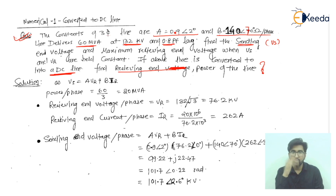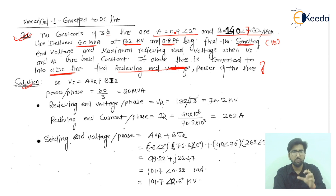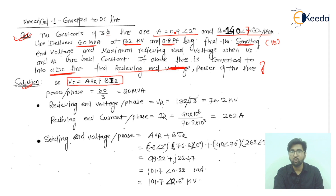Now we start with the solution. We have some given data which we will list and solve accordingly. For a long transmission line, the sending end voltage VS is given by: VS = A·VR + B·IR, where A and B are the transmission line constants.